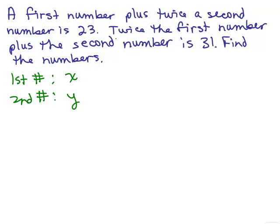Now we need to write two equations. The first sentence gives us the first equation. A first number, x, plus twice a second number, so that would be 2y since y is the second number, is 23.